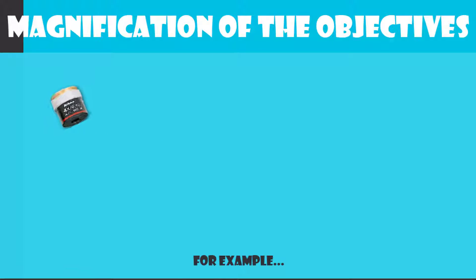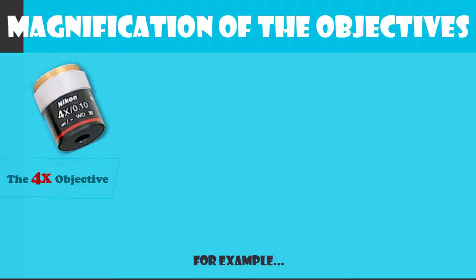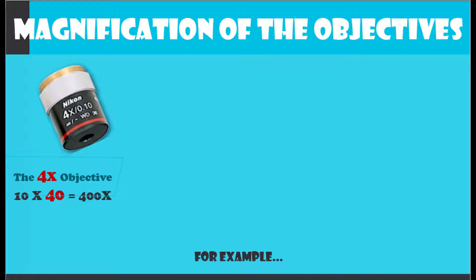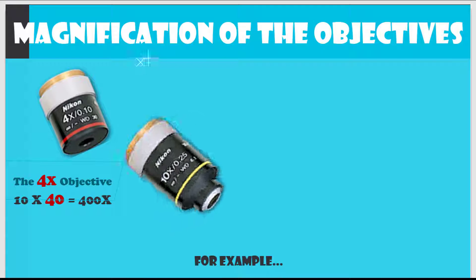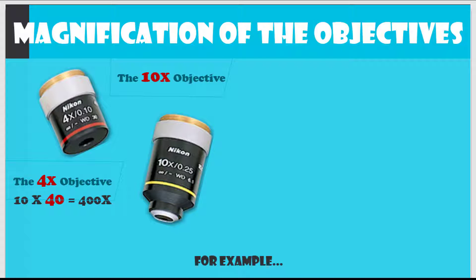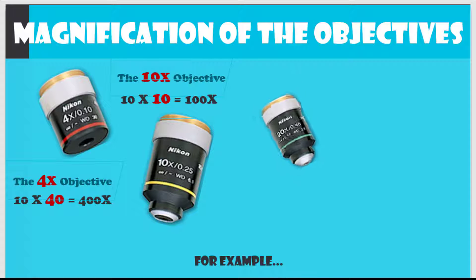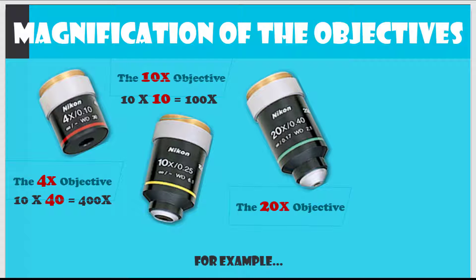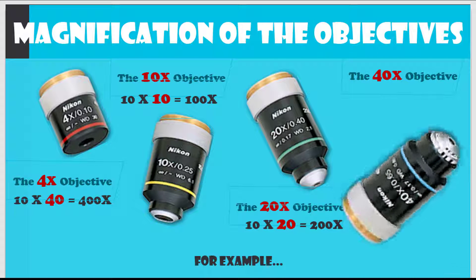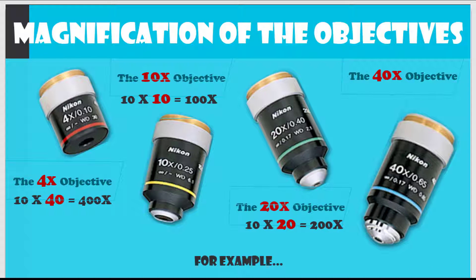For example, using your 4x objective, your specimen will appear 400 times larger than with the naked eye. Using the 10x objective, your specimen appears 100 times larger than with the naked eye. A specimen appears 200 times larger if you are using the 20x objective, and 400 times larger if you are using the 40x objective.